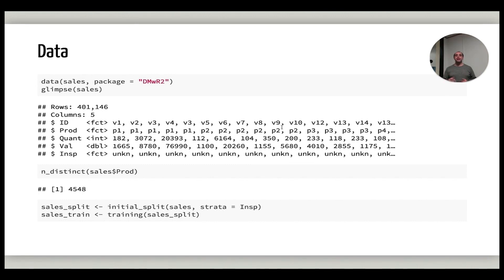For example, let's say you had a dataset of sales transactions and you wanted to predict which transactions are fraudulent and which ones are not. Having product in there, you can imagine how that would help the predictive ability of the model. But with over 4,500 unique products, that's going to cause problems with creating your model.